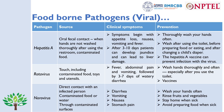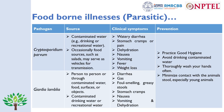Rotavirus infects through touch, including contaminated food, toys, and utensils. Common symptoms are fever, abdominal pain, and vomiting followed by three to seven days of watery diarrhea. Prevention includes frequent handwashing, especially after using the toilet, and there are vaccines available for rotavirus. Norovirus spreads through direct contact with an infected person, contaminated food or water, or contaminated surfaces. Symptoms include diarrhea, vomiting, nausea, and stomach pain. Prevention includes frequent handwashing, rinsing fruits and vegetables, staying home when sick, and avoiding food preparation when experiencing diarrhea symptoms.